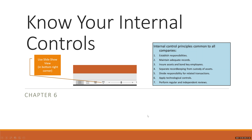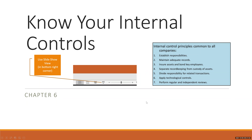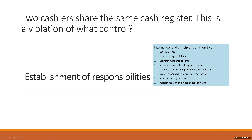Now I'm going to give you an opportunity to identify which of the seven principles applies. First scenario: two cashiers share the same cash register — this is a violation of what control? The answer is established responsibilities. You are correct. Nicely played.